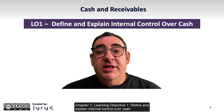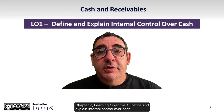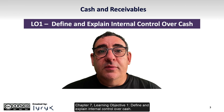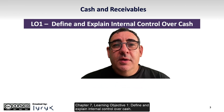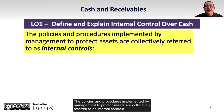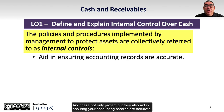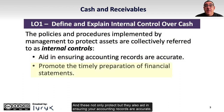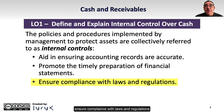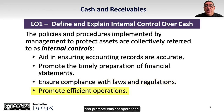Chapter 7, Learning Objective 1: Define and Explain Internal Control Over Cash. The policies and procedures implemented by management to protect assets are collectively referred to as internal controls. These not only protect, but also aid in ensuring accounting records are accurate, promote the timely preparation of financial statements, ensure compliance with laws and regulations, and promote efficient operations.